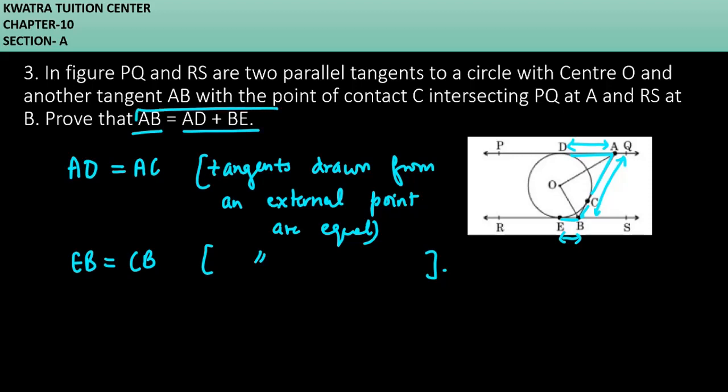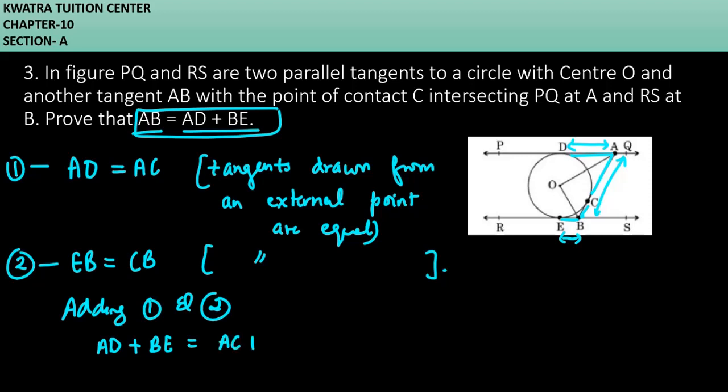I can get to the solution. It's very easy. Add two equations. Let it be one, let it be second one. Adding one and two, left side to left side, right side to right side. AD will be with BE and AC will be with CB. If you add AC and CB, you will get AB.